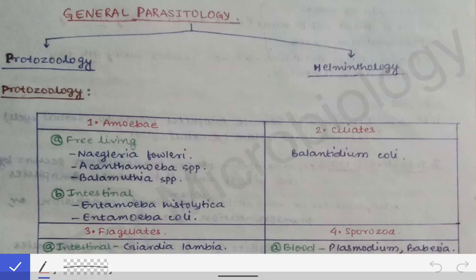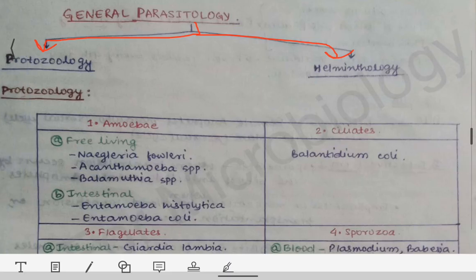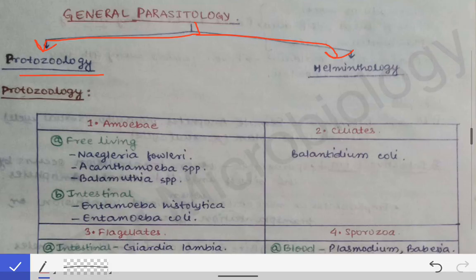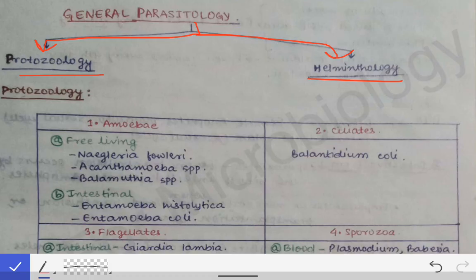The parasite is divided into two classes: one is the protozoa and the other is the helminth. Based on that classification, parasitology is also classified into two parts — protozoology and helminthology. In protozoology we read about the protozoa, while in helminthology we read about the helminths. The difference between protozoa and helminths is that protozoa are eukaryotic unicellular organisms, while helminths are eukaryotic multicellular organisms.